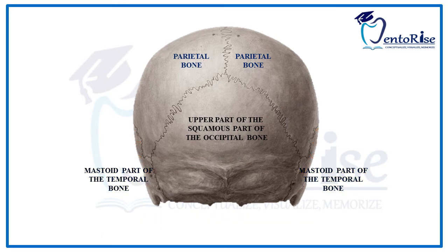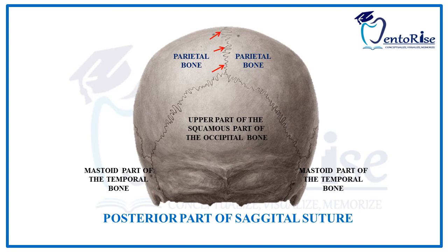Also, the posterior part of the sagittal suture can be appreciated from Norma Occipitalis. This suture is present between the two parietal bones; however, from Norma Occipitalis we can only see the posterior part of this suture.